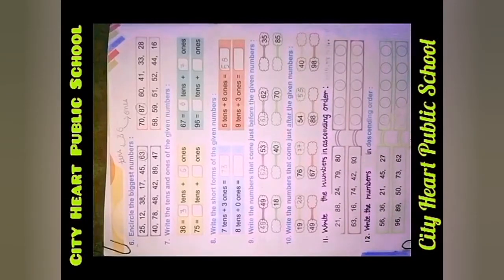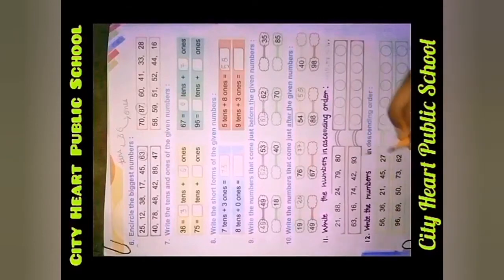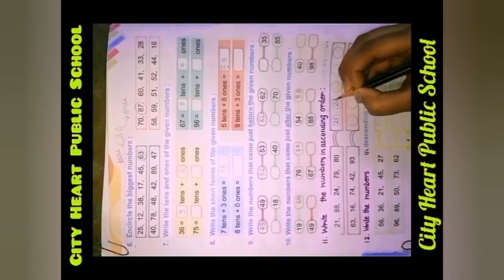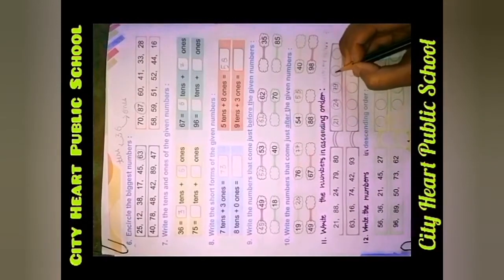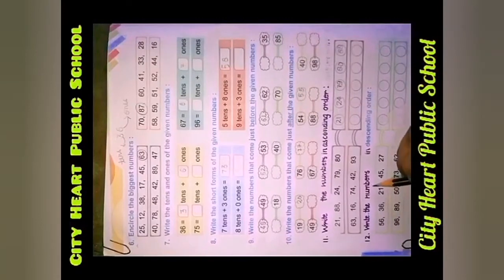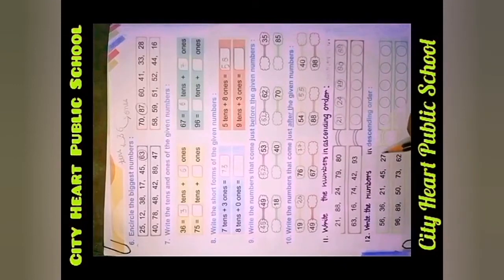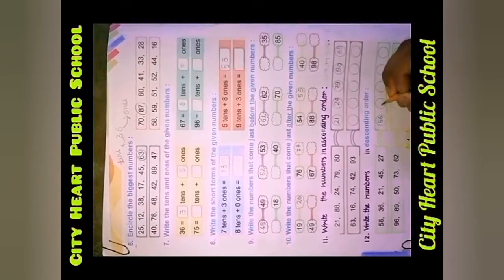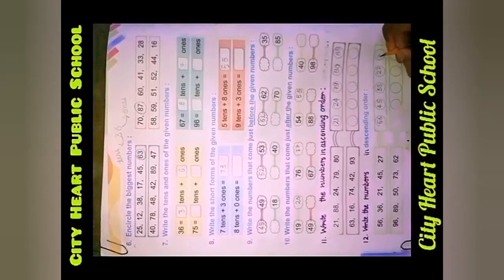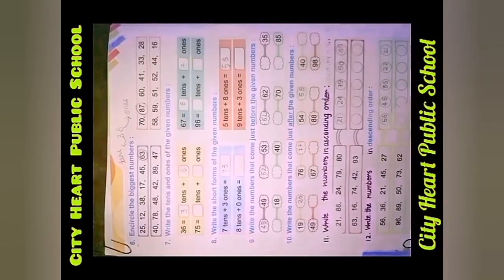Then coming to question number 11: Write the numbers in ascending order. Aapne ascending order, descending order padha hua hai. Ascending order mein hum sabse choti number ko pehle aur sabse badi ko last mein likhte hain. So let's write it: twenty one, twenty four, seventy nine, 80, and then 88. Same as here in question number 12, you have to write in descending order — the biggest number first and the smallest last. So: 56, 45, 36, 27, and 21.